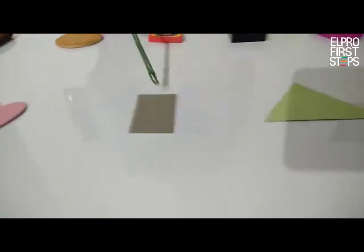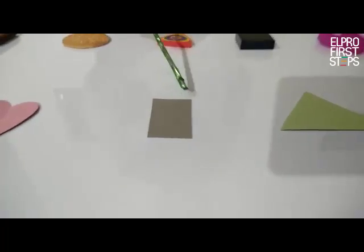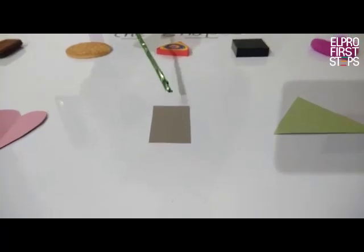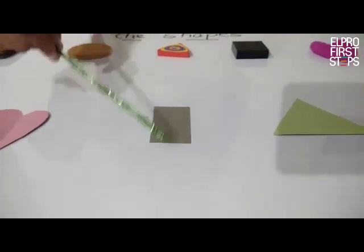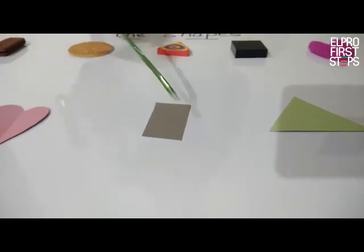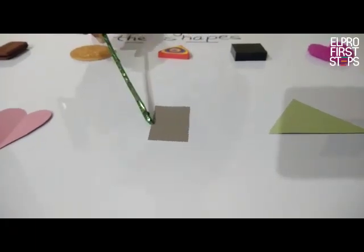We have a rectangle here. Rectangle also has four sides but it has two sides which are equal to each other. They are equal. This side and this side are equal.